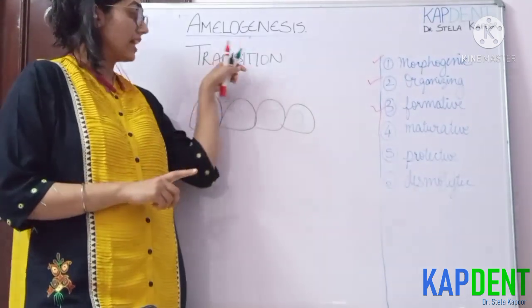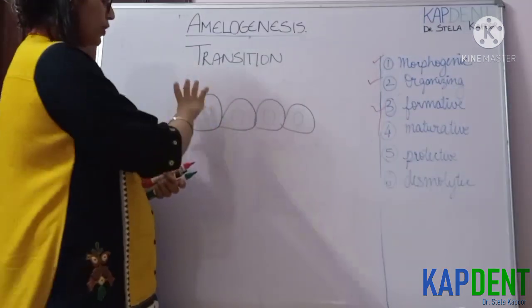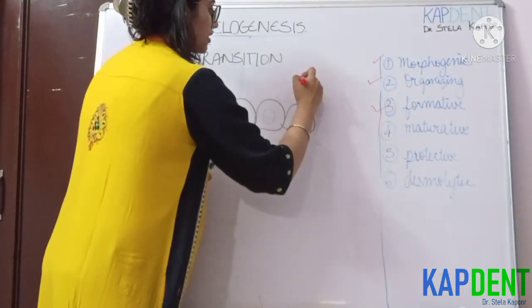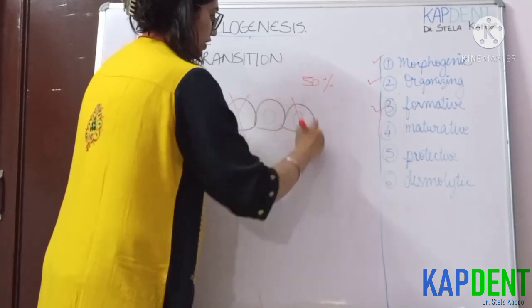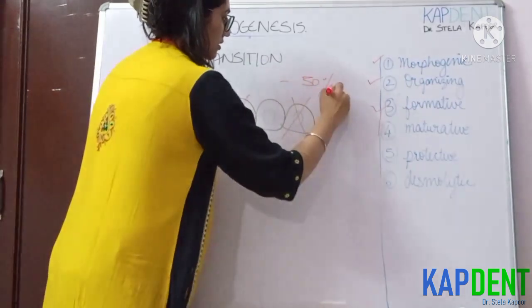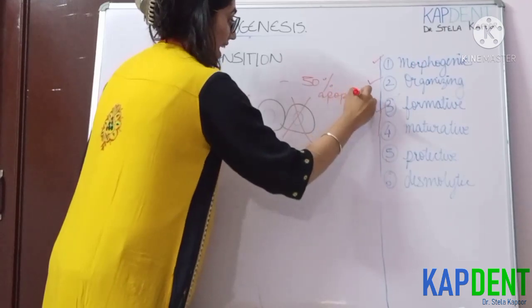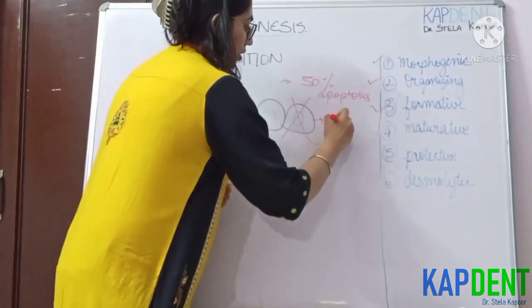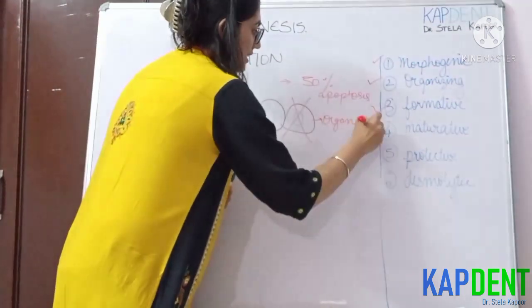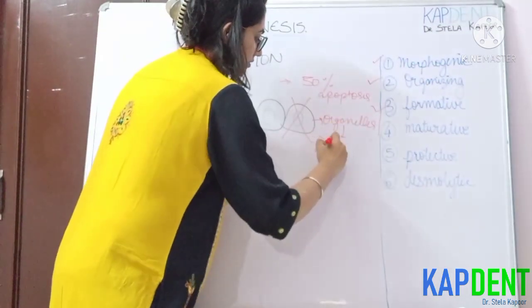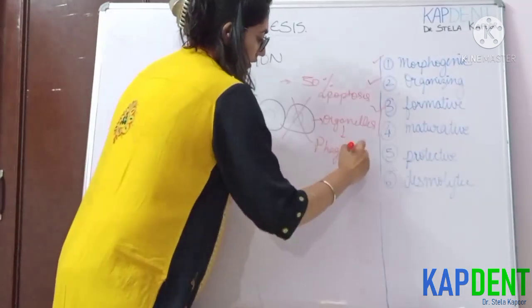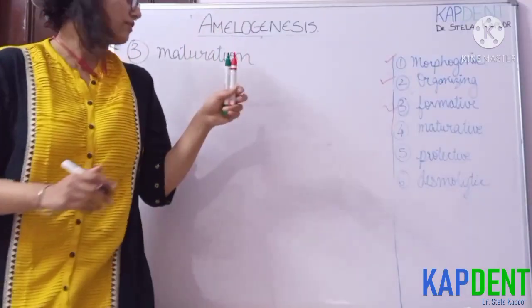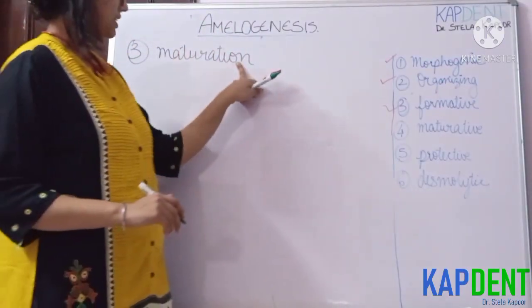After the secretory process and prior to the initiation of maturation and mineralization, there is a transition stage in which the ameloblasts reduce in height and about 50 percent of the ameloblasts undergo apoptosis or programmed cell death. The organelles responsible for protein synthesis undergo phagocytosis during this transition stage.